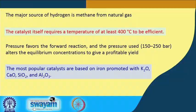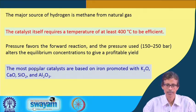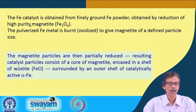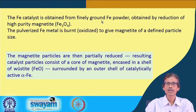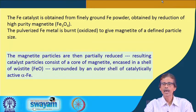Welcome back to this class where we were talking about the production of ammonia on an industrial scale using an iron-based catalyst. This particular iron catalyst can be obtained from iron powder, and very good quality iron powder can be obtained from high purity magnetite.